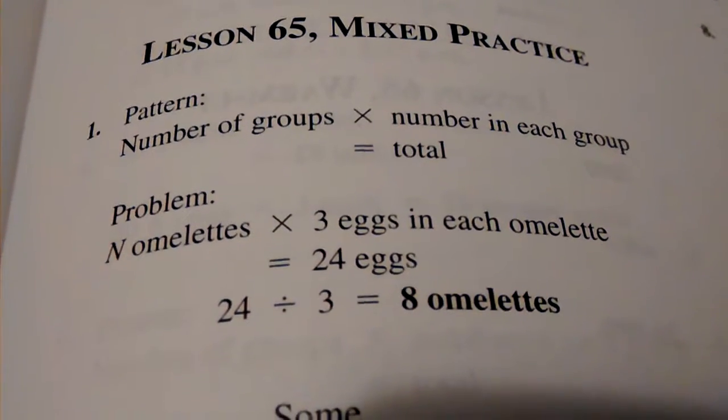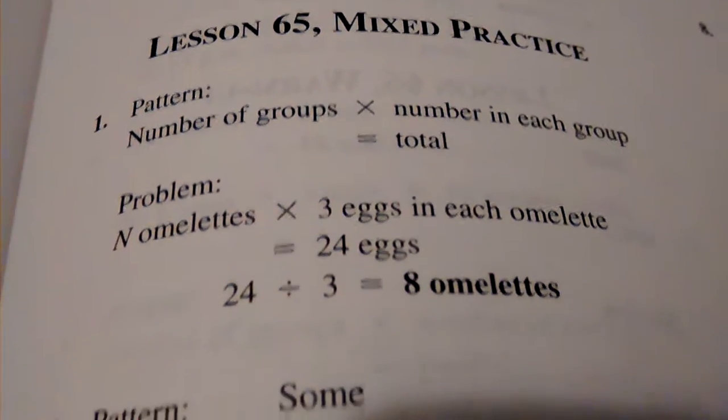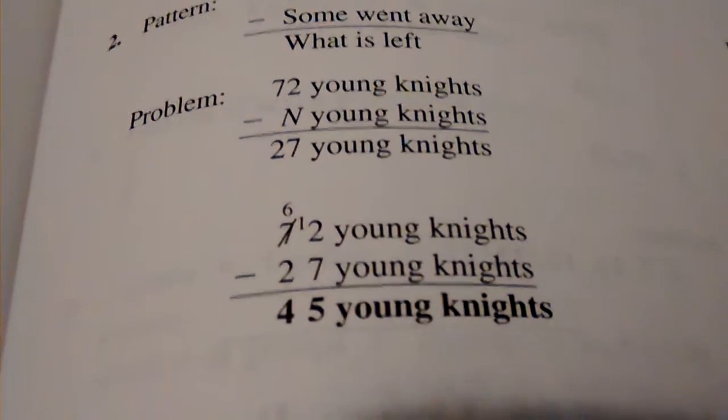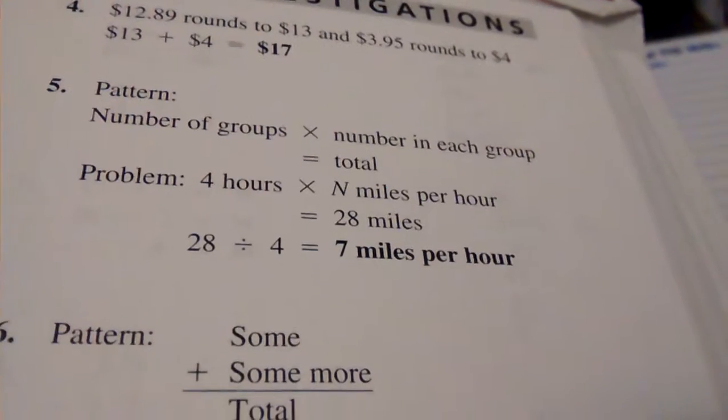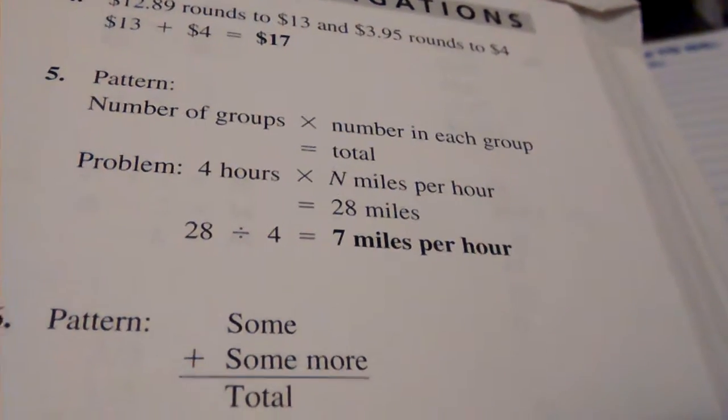Page 65. Number 1, 8 omelets. Number 2, 45 young knights. Number 3, 36 months. Number 4, 17 dollars. Number 5, 7 miles per hour.